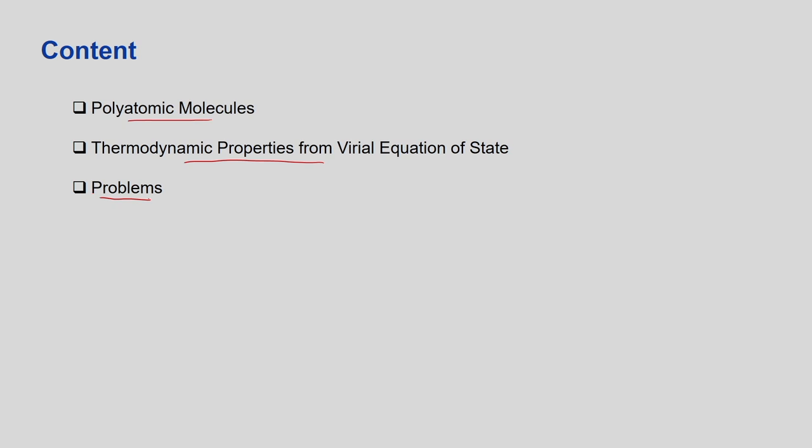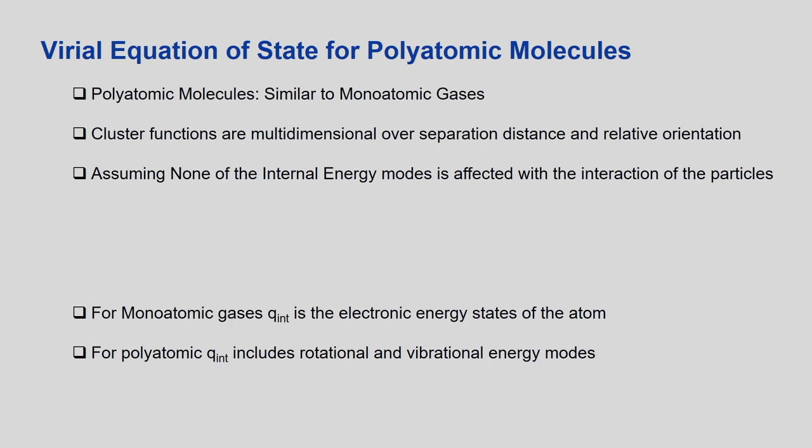We will not take complicated problems related to these integrals because they must be solved numerically. For polyatomic molecules, all expressions follow the same analogy as for beta 1, beta 2, beta 3. But the form of beta 1, beta 2, beta 3 will be different because there will be an additional parameter relating to the orientation of the atom. The cluster functions are multidimensional over separation distance and there will be an additional relative orientation.